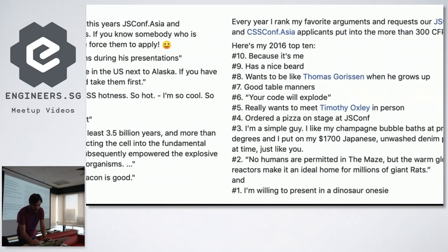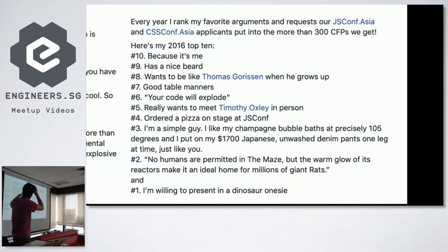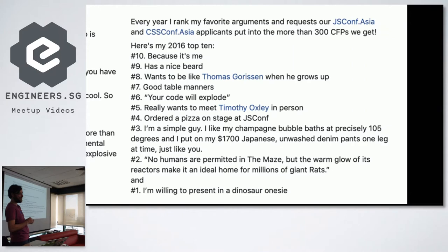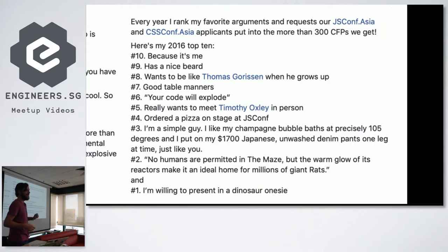So these were my top 10 in 2016. Number ten: 'because it's me, has a nice beard, wants to be like me.' It's also a great reason — who can deny that? Has great table manners. 'Your code will explode' — I thought was fantastic too. 'Really wants to meet Tim Oxley in person.' 'Order the pizza on stage at JSConf before.' Or: 'I'm a simple guy. I like my champagne bubble bath at precisely 105 degrees and I put my $1,700 Japanese unwashed-in pants one leg at a time, just like you.' Number two: 'No humans are permitted in the maze, but the warm glow of its reactors make it an ideal home for millions of giant rats.' And number one: 'I'm willing to present in a dinosaur onesie.'